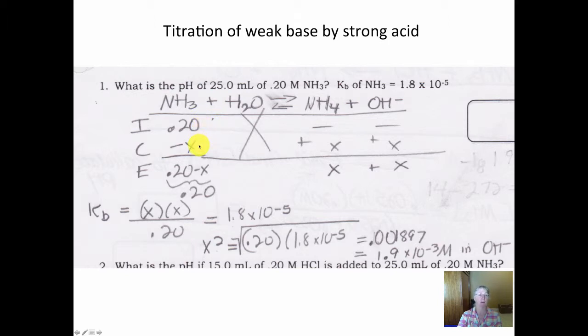It changes by reducing an X while ammonium and hydroxide increase by X. We get to ignore the X once again because the Kb is small, 1.8 times 10 to the minus 5. So knowing what we know about Kb, it would be ammonium times hydroxide divided by NH3. We would set that equal to 1.8 times 10 to the minus 5, the Kb.